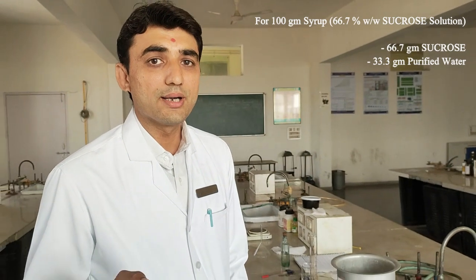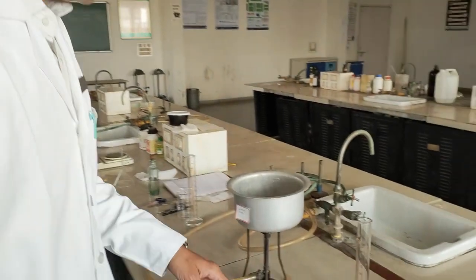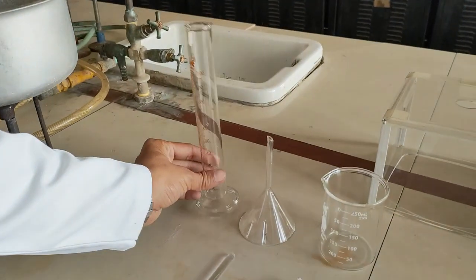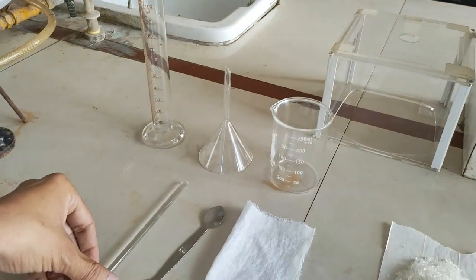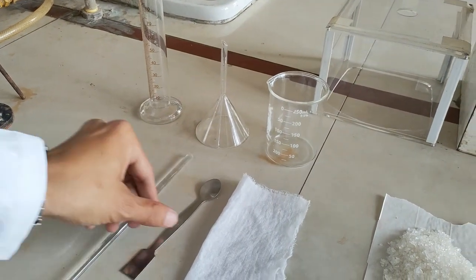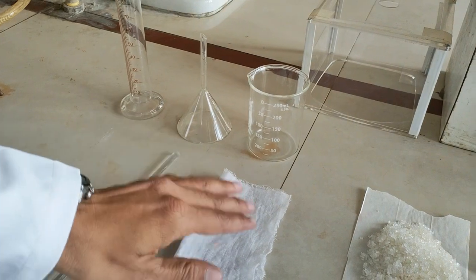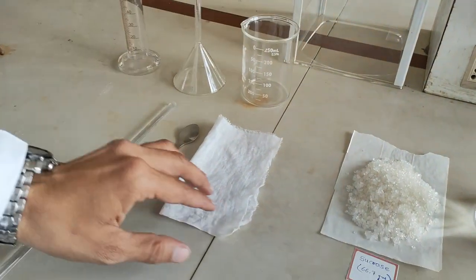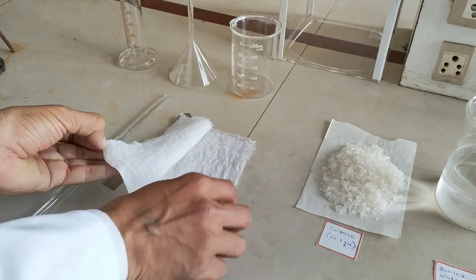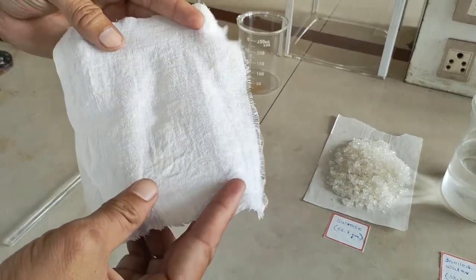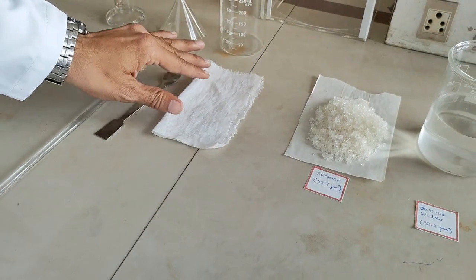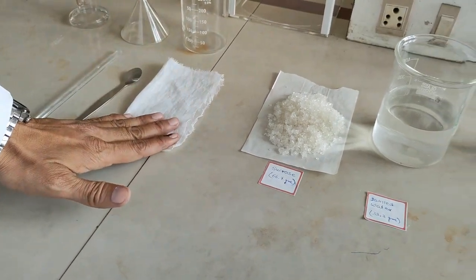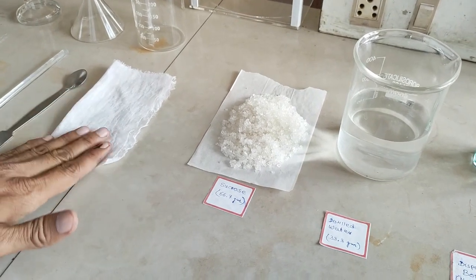For the preparation, we require a measuring cylinder, funnel to make the filtration assembly, glass rod, spatula, one beaker, and muslin cloth. This is a simple filtration cloth. Simple filter paper will not work here because it will get blocked due to the high viscosity of syrup.